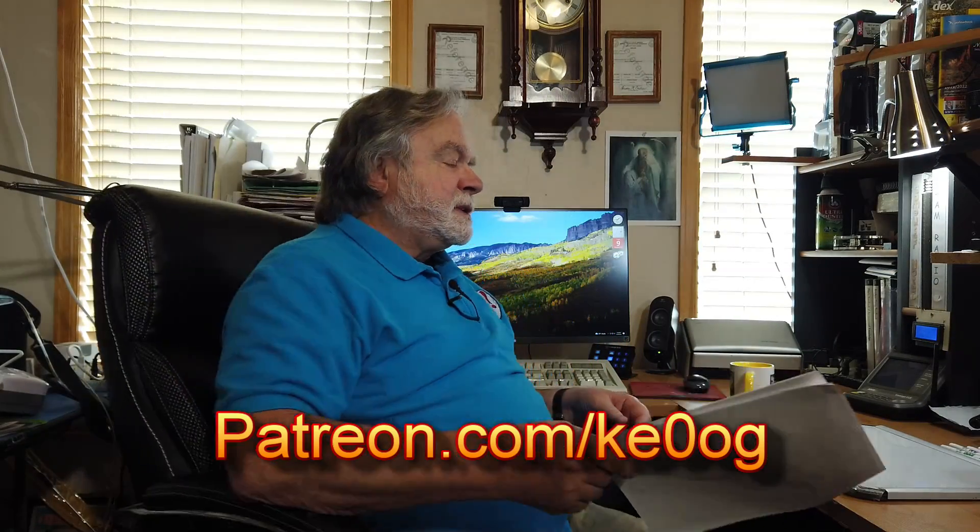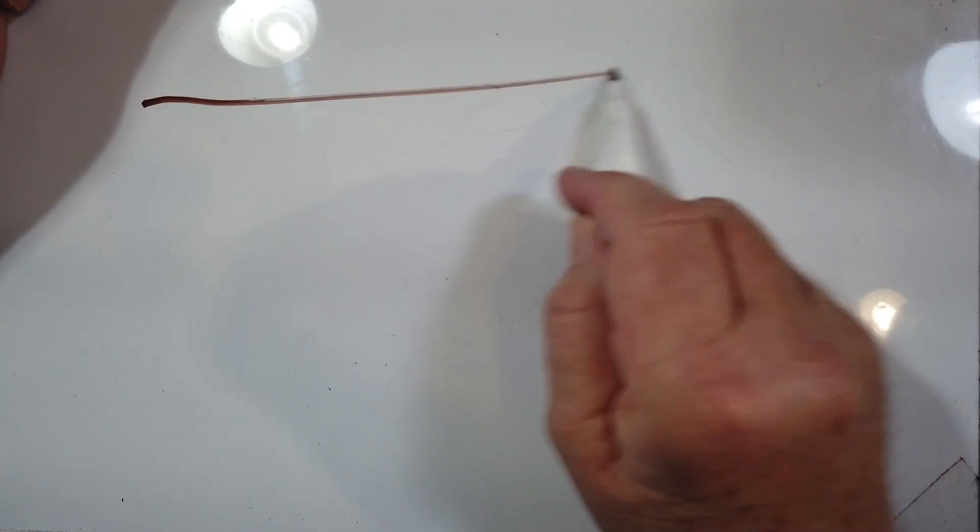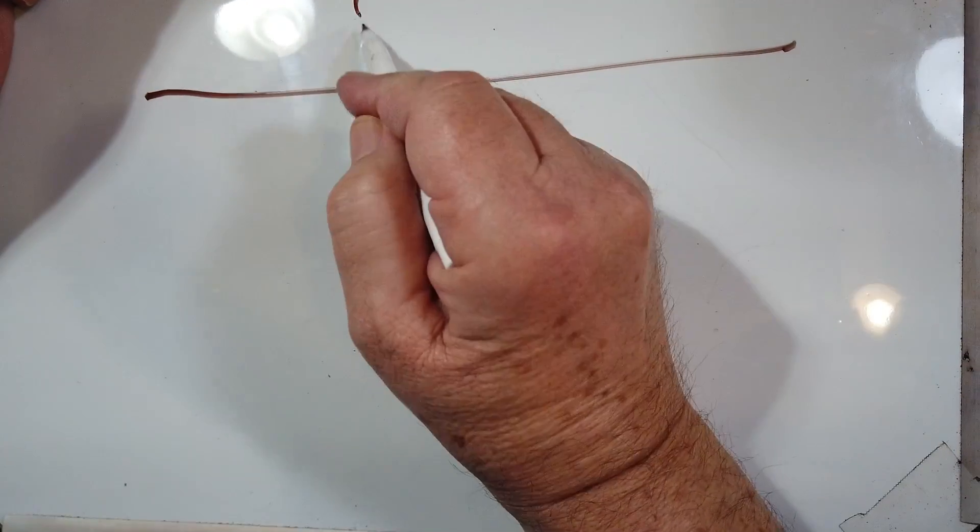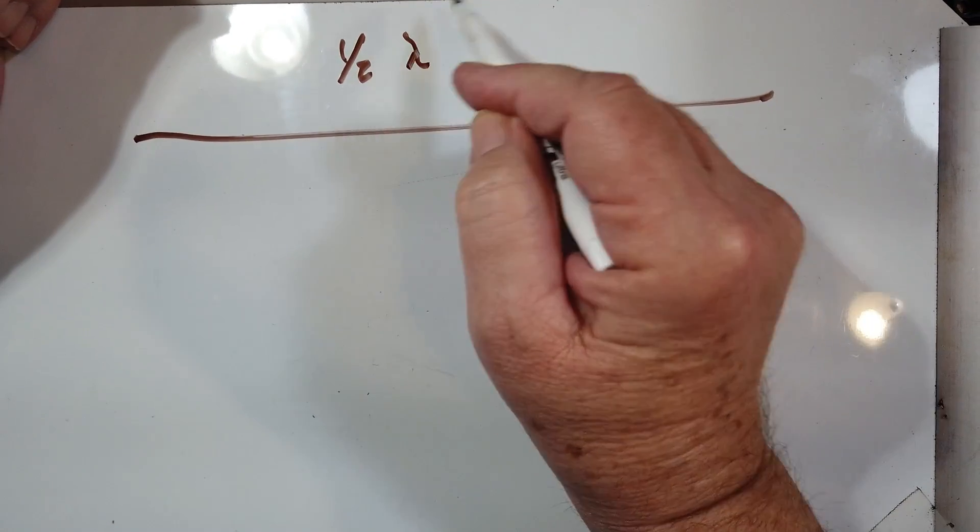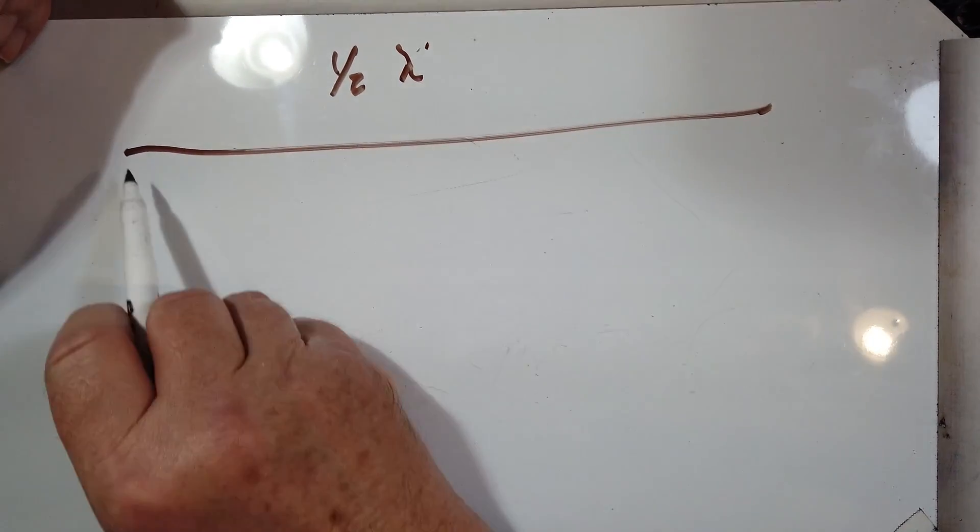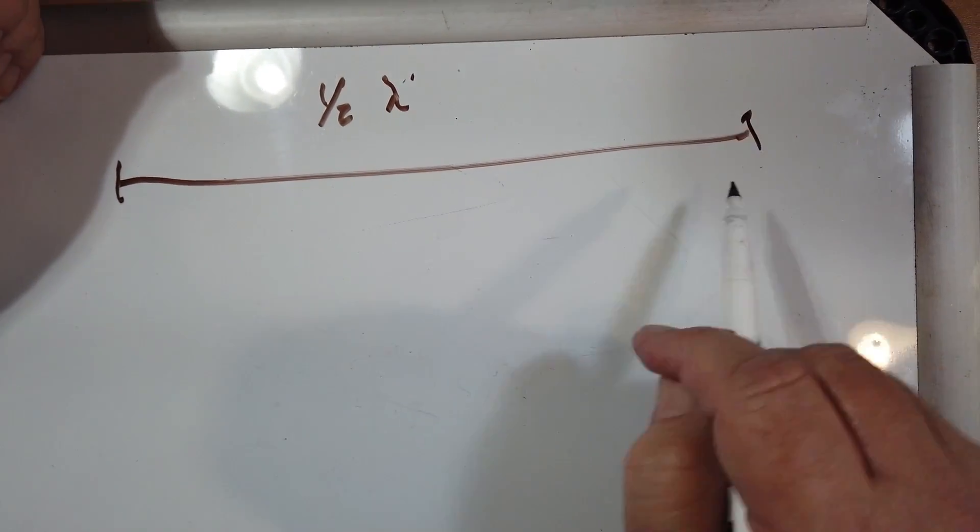Okay, let's take a look at what is going on here. We have a dipole. A dipole is one-half lambda, which is the wavelength. It's the Greek letter for wavelength. So from here to here is a half.